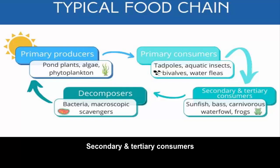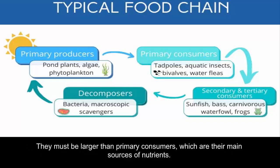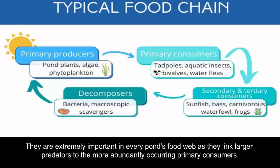Secondary consumers are generally carnivorous. Some are omnivorous and can switch between being key components of primary and secondary trophic levels. They must be larger than primary consumers, which are their main sources of nutrients. In freshwater ponds, secondary consumers range in size from young gobies and small amphibians to enormous sturgeons. Several bait fish fall under this category. They are extremely important in every pond's food web as they link larger predators to the more abundantly occurring primary consumers.